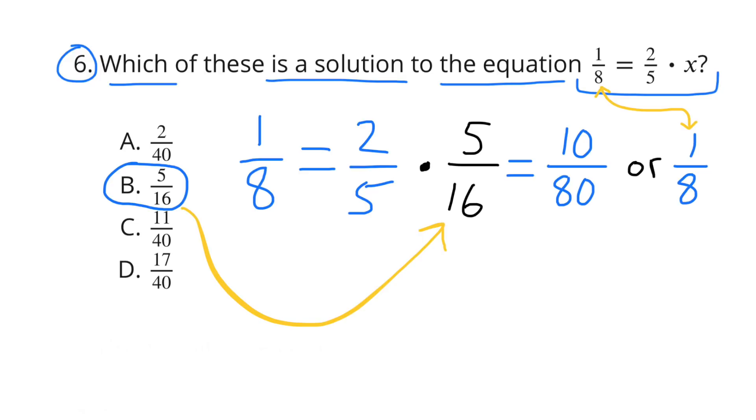Number 6: Which of these is a solution to the equation 1 eighth equals 2 fifths times x? This can be translated as 2 fifths times what number equals 1 eighth. I substituted these numbers for x until I figured out which one was correct. I chose B, 5 sixteenths. 1 eighth equals 2 fifths times 5 sixteenths. And 2 fifths times 5 sixteenths is 10 eightieths or 1 eighth. So it's true. 1 eighth does equal 2 fifths times 5 sixteenths.